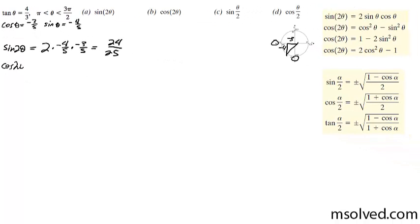Cosine of 2θ is going to be equal to, I'm going to go ahead and use the second formula here. You can use one of the three, and what you're going to do is it's going to be cosine squared, which is equal to negative 3 over 5 minus negative 4 over 5 squared, both squared. This gives us 9 over 25 minus 16 over 25, which is negative 7 over 25.